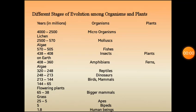Here are the different stages of evolution among organisms and plants. You can see three columns here: one column shows years in millions, the second is organisms, and the third is plants.